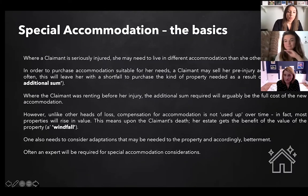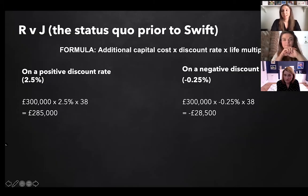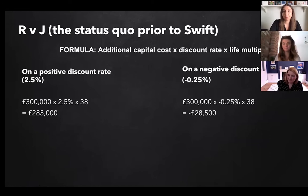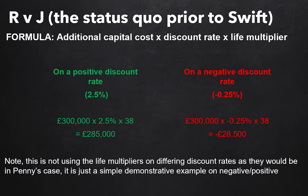Going forward then, why don't we talk about the way things were done prior to Swift and Carpenter? You will have seen that all legal commentaries are now on Swift versus Carpenter. But before that decision, there was a very well-established precedent. We'll be going through the formula that's on the screen now. Sarah, do you want to talk through Roberts v Johnston — how it came about and the principles that were applied?